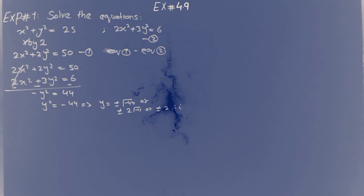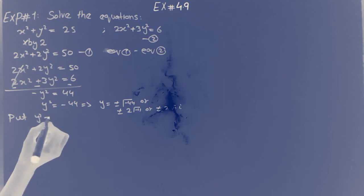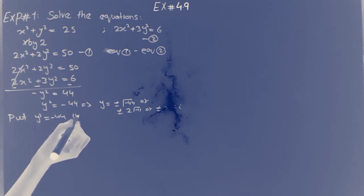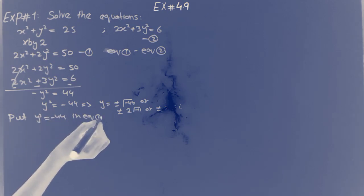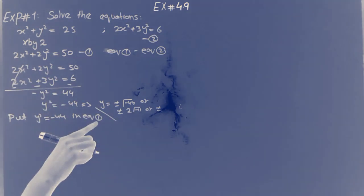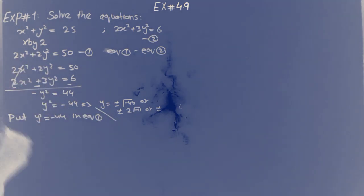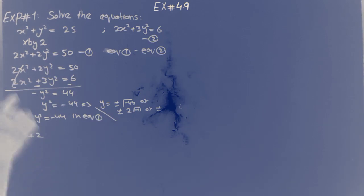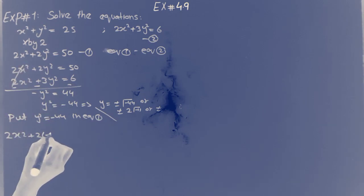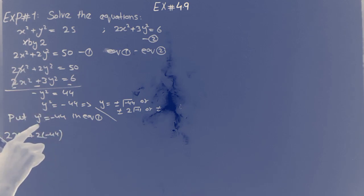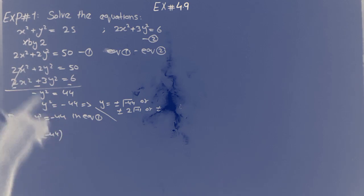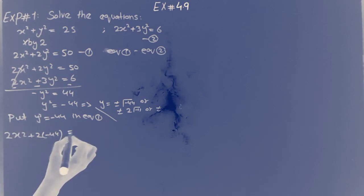We write it with iota, because it is a minus square root: plus or minus 2√11 · i. Now we put y-square equal to minus 44 in equation 1. We write 2x-square plus 2(y-square), where y-square is minus 44, equal to 50.